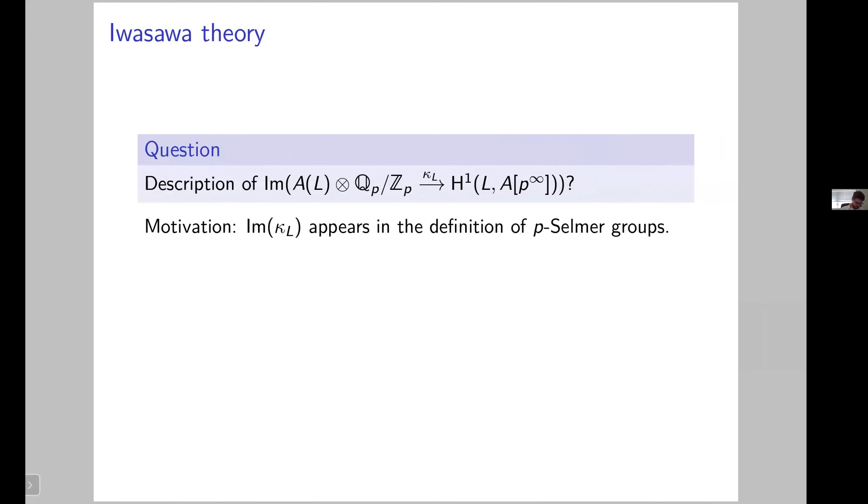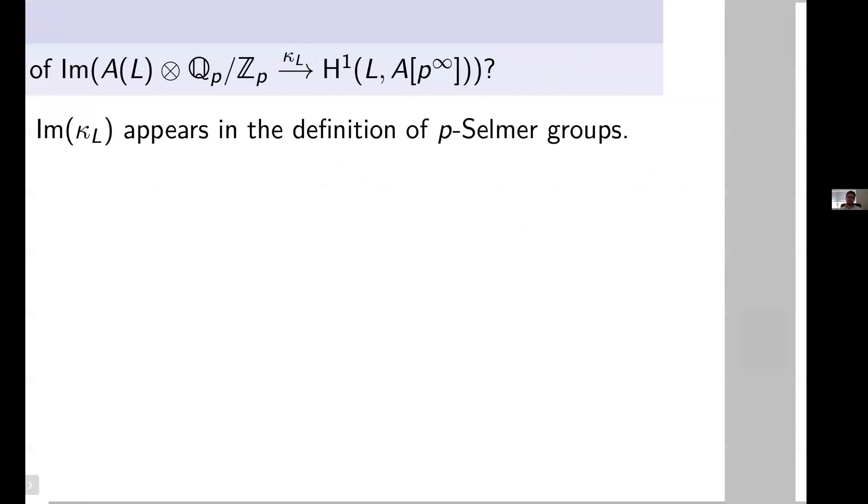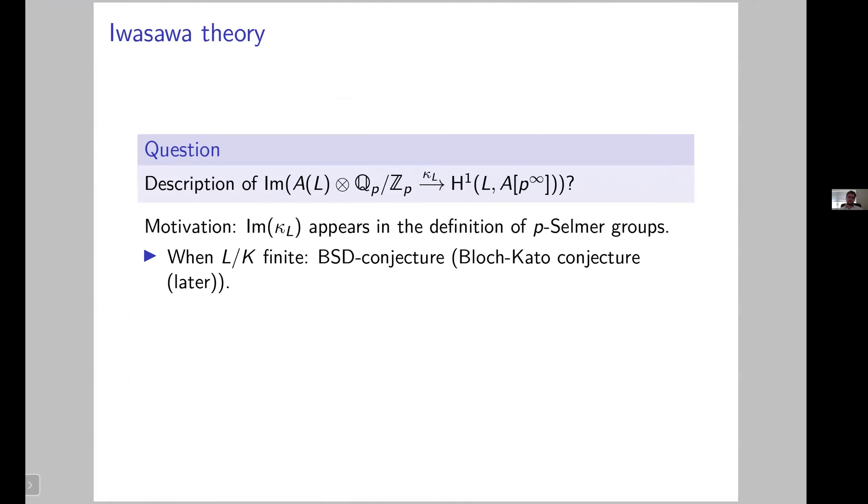How do these rational points sit inside this Galois cohomology group? Let me explain a bit why we are interested into this very precise question. This image of the Kummer map appears in the definition of the p-Selmer groups when the Abelian variety comes from an Abelian variety defined over a number field. If your Abelian variety is defined over a number field, locally at p, you can consider this Kummer map and you can construct the Selmer group. To study the Selmer group, we need a nice description of this image of the Kummer map.